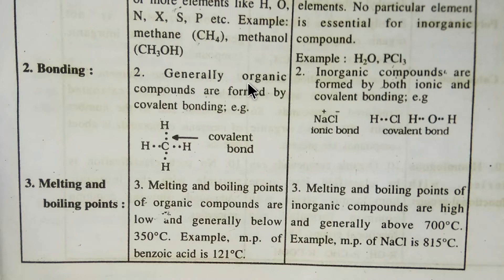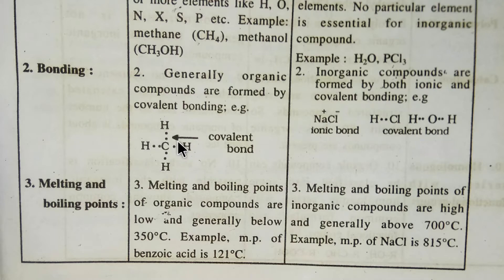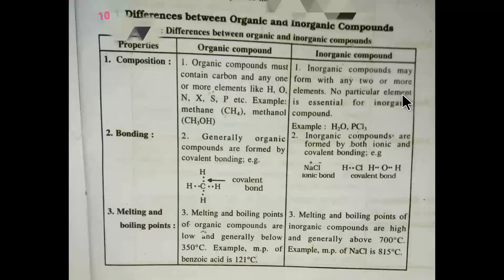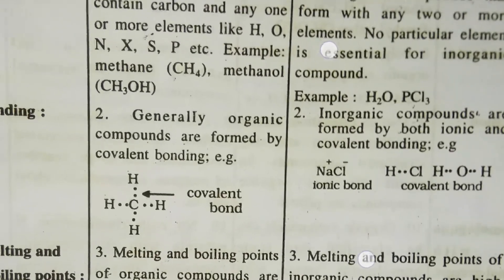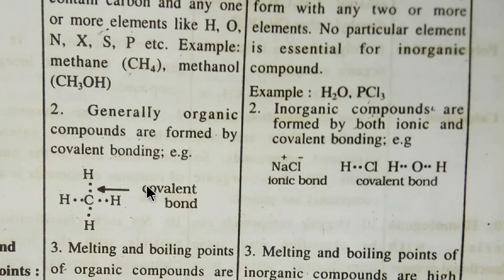The second point is bonding. Generally, organic compounds are formed by covalent bonding. For example, in methane, every bond in this molecule is a covalent bond. On the other hand, inorganic compounds are formed by both ionic and covalent bonding.